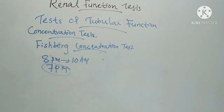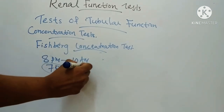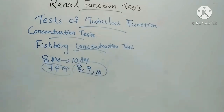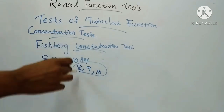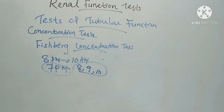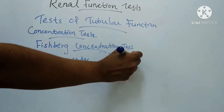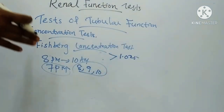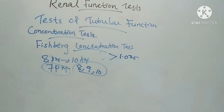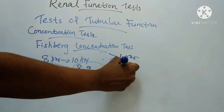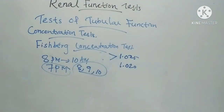Urine passed at night is discarded. Then urine samples are collected at 8 am, 9 am, and 10 am, and the specific gravity of each sample is determined. If tubular function is normal, the specific gravity of at least one of the three samples will be greater than 1.025. A specific gravity of 1.020 or less indicates impaired tubular function.